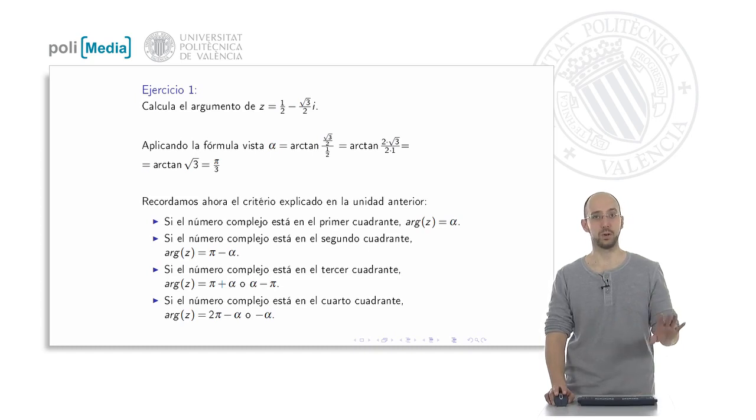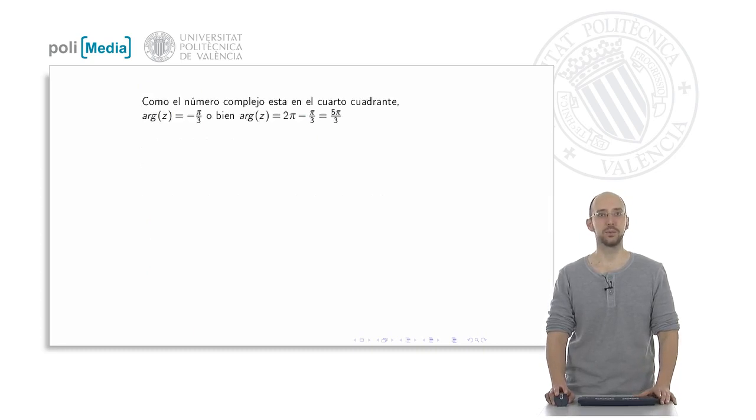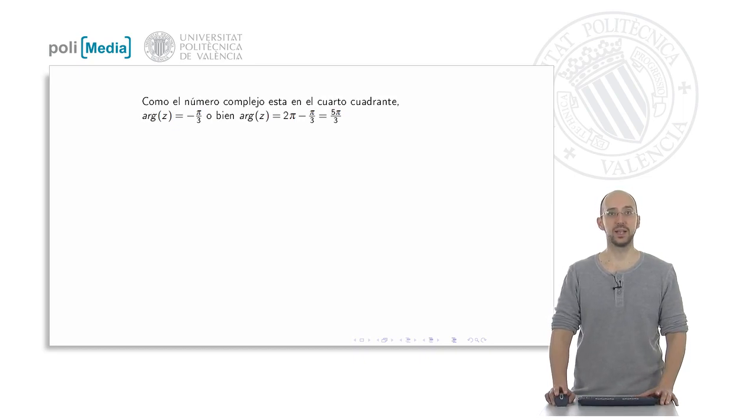As we remembered in the previous unit, we had the following criteria. If the complex number is in the fourth quadrant, what we would have to do is to subtract 2pi from the value we have calculated or simply change its sign. Notice that in this case the argument of z would be either minus pi thirds or 2pi minus pi thirds, that is 5pi thirds.